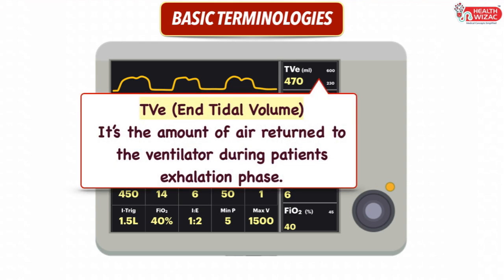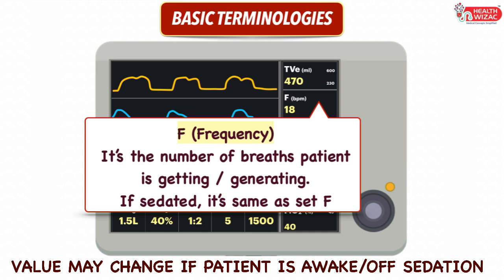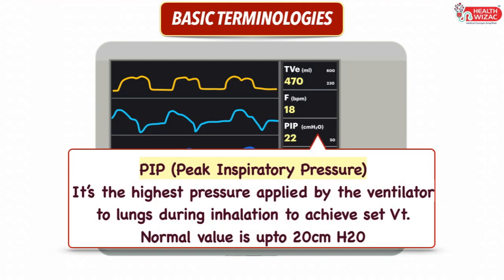Next is TVE, or end tidal volume, which is the amount of air returned to the ventilator during the patient's exhalation phase. Next is patient frequency, which is the number of breaths the patient is actually getting or generating. It is usually the same as the set frequency if the patient is sedated, but may change if the patient is awake, in weaning mode, or off sedation. Next is PIP, or Peak Inspiratory Pressure.